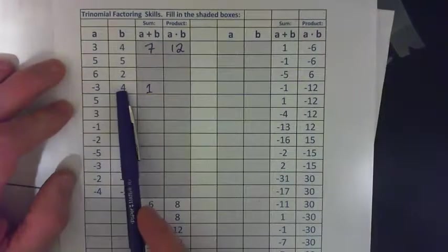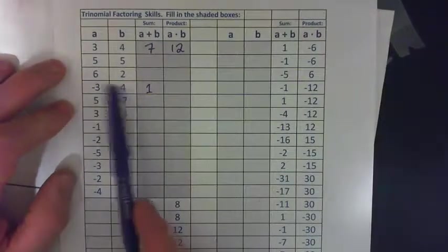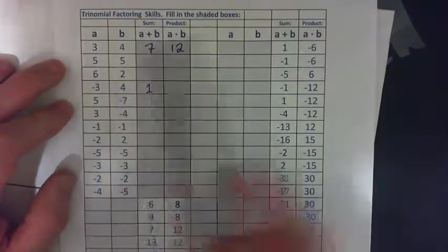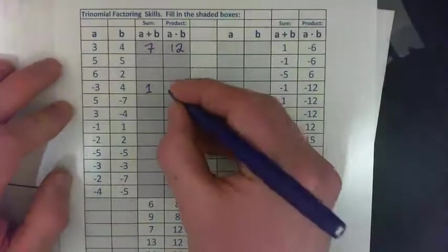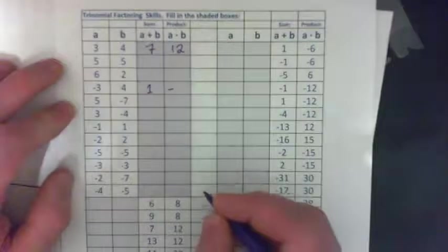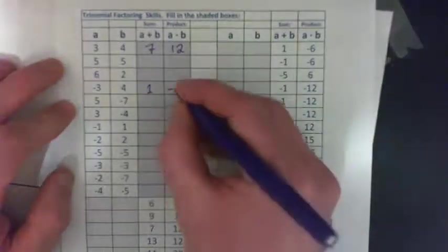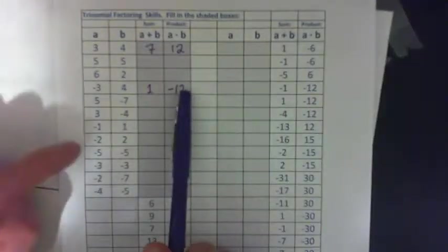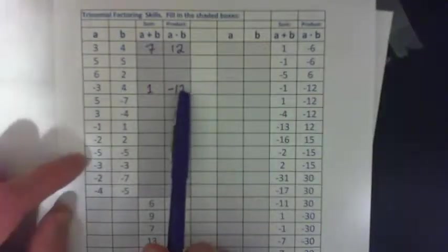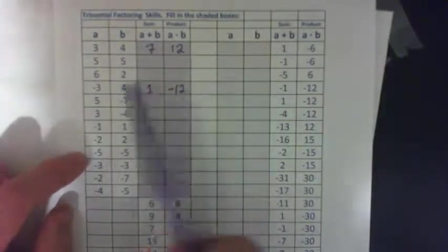Multiply them: negative 3 times positive 4. Negative times a positive gives a negative. 3 times 4 is 12. So A plus B is positive 1, A times B is negative 12. Let me go down to where we have two negatives.